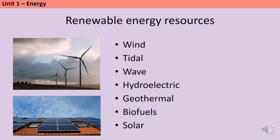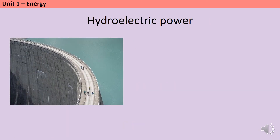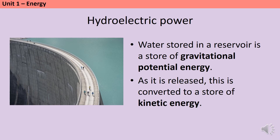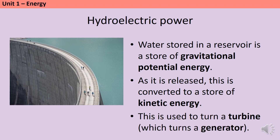Solar panels directly absorb the sun's energy. In hydroelectric power plants, water is stored behind a man-made dam at a relatively high altitude, acting as a store of gravitational potential energy. The water is then released from behind the dam, and as it falls, the gravitational potential energy is converted to kinetic energy. As the water falls, it turns a turbine, the turbine turns a generator, and this generates electricity.